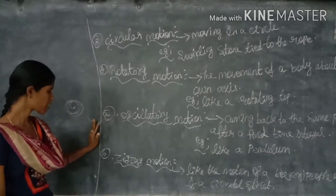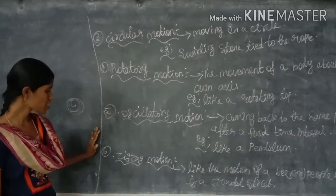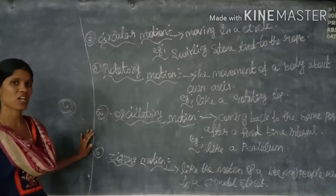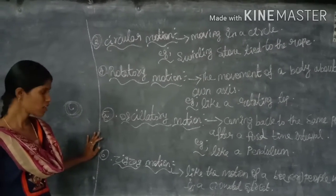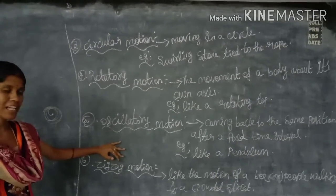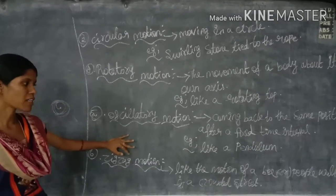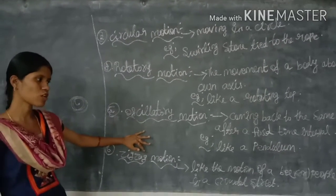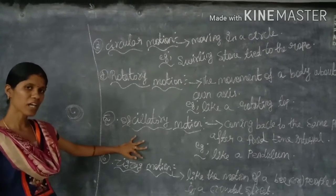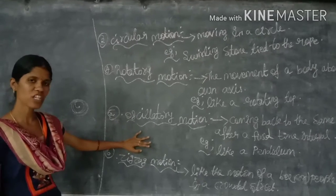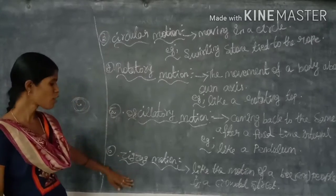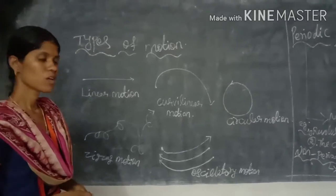The last type of motion is zigzag motion. In zigzag motion there is no fixed direction — we can't indicate any direction of the motion. For example, the motion of a bee, or people walking in a crowded street. We can't identify the direction of people walking in a crowded street. These are the different types of motion.